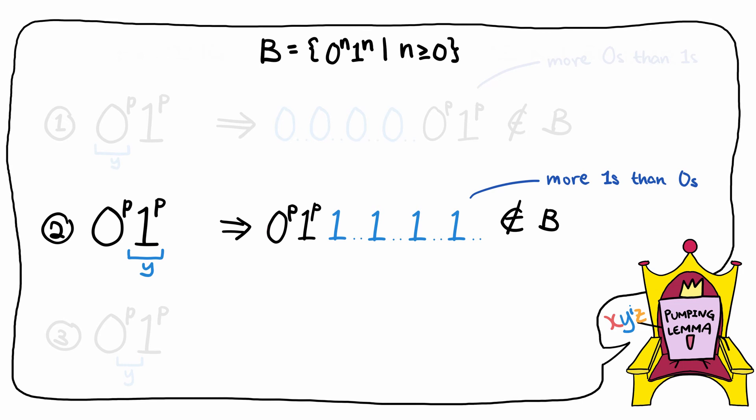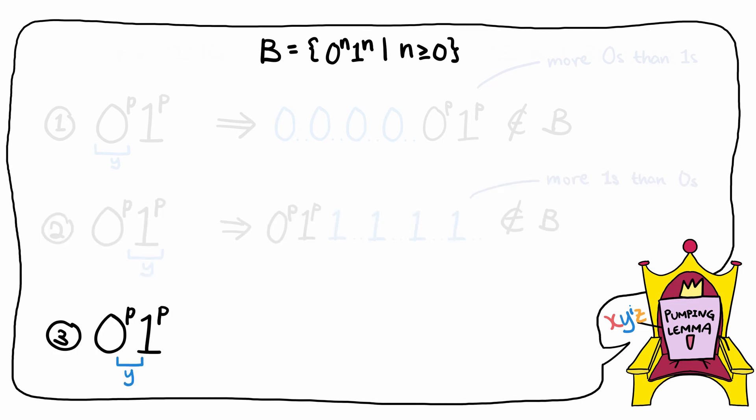And if the pumping string y was somewhere in the middle where it consisted of both 0s and 1s, then we may end up with a string with a different sequence, which also does not belong in the language.